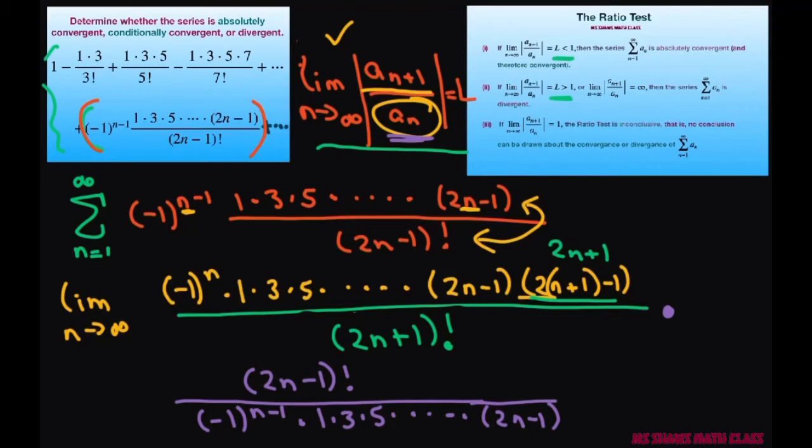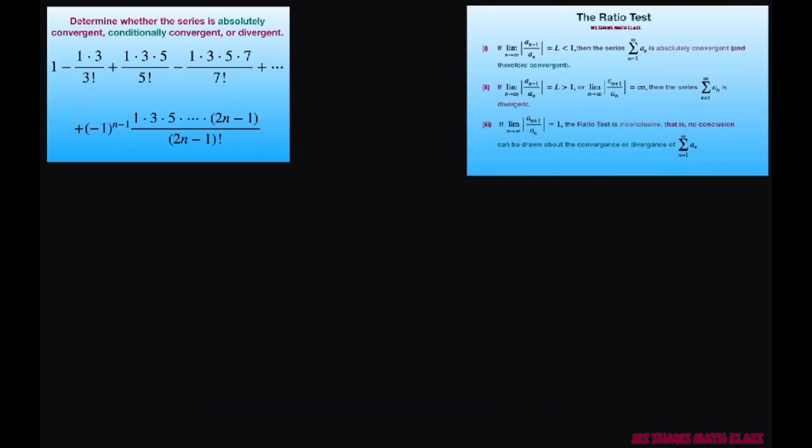when you divide these two, this is just going to be negative 1 to the n minus n plus 1. So that's just going to end up being negative 1 to the first power.